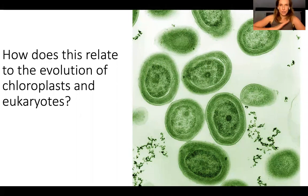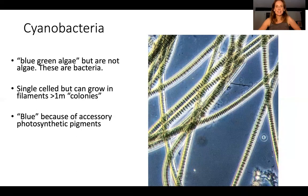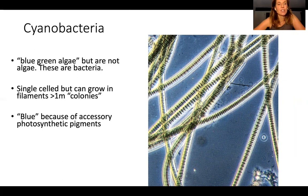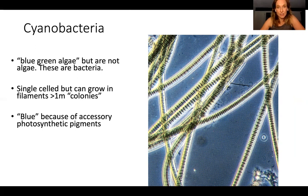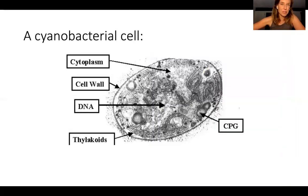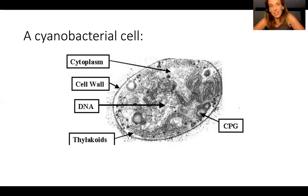Let's go back to the evolution of eukaryotes from these photosynthetic cells. How does it happen? Well, let's go back to cyanobacteria — these long strings of bacterial cells called blue-green algae, though they're not actually algae; they're bacteria. They're single-celled but can grow into filaments that can be quite long for microscopic organisms. They're blue because of the accessory pigments that help chlorophyll a capture light.